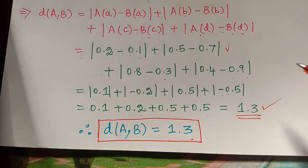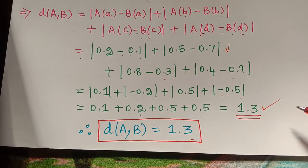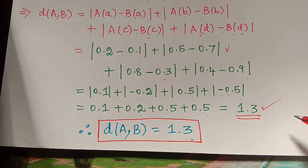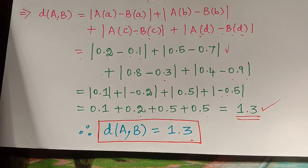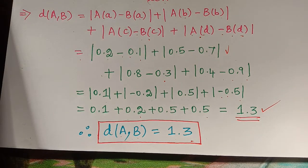So this is the concept of Hamming distance under fuzzy set theory. Hope you have understood this concept. Thank you.